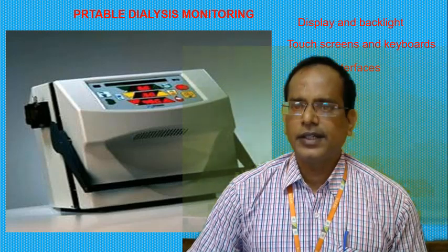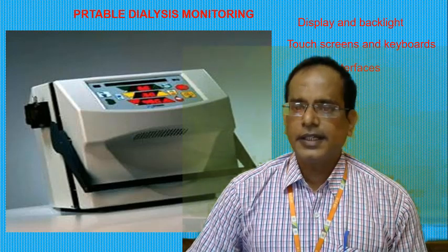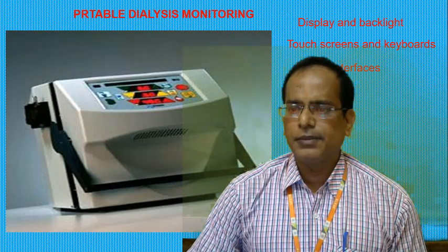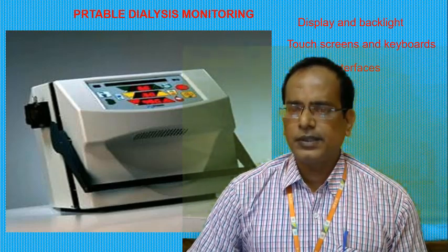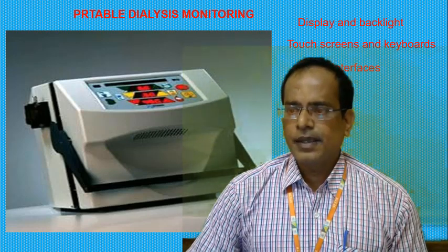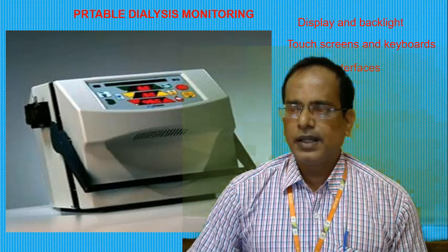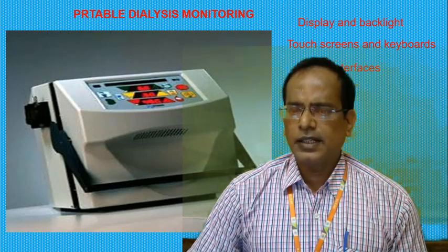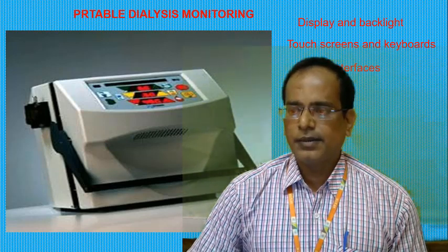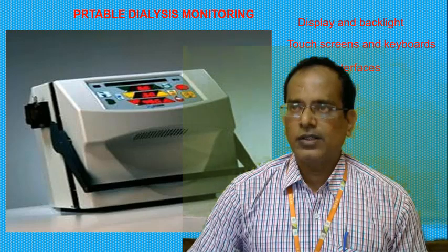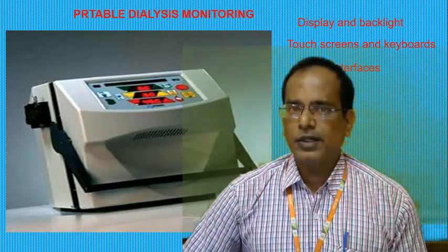Next is data interface. A running record of the dialysis process for each patient session is kept electronically. Dialysis machines can include USB ports, Ethernet, and a variety of serial ports such as RS-232, RS-485, and RS-422, which interface with legacy hospital information systems. Wireless interfaces such as Wi-Fi can also be included for direct connection to the hospital wireless network, allowing remote monitoring.